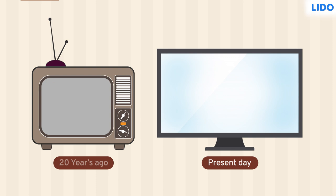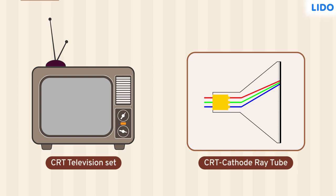Yes, the television sets then had a box-like structure and were called CRT television sets. CRT stands for cathode ray tube, which was used to display images on the screen.